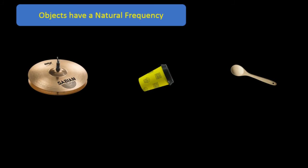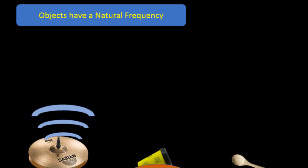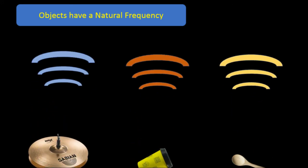Next, the lesson talks about something called natural frequency. If we were to drop all three of these objects, a drum cymbal, a coffee cup, and a wooden spoon, they'd hit the floor and they'd vibrate, but they'd all sound different. The vibrations would be different, and this is their natural frequency. All objects have their own natural frequency.